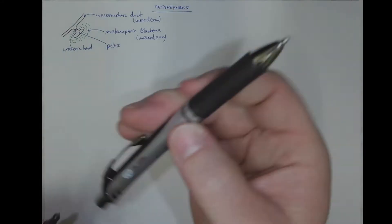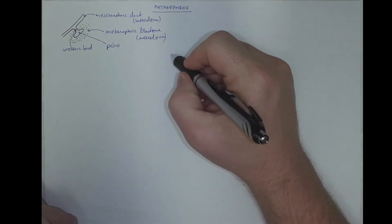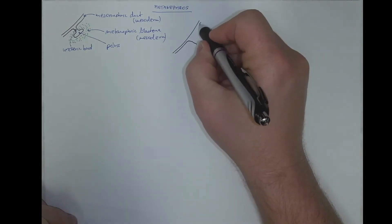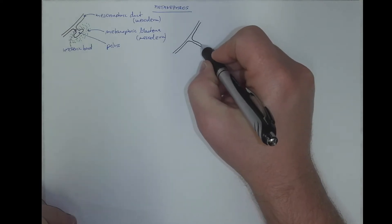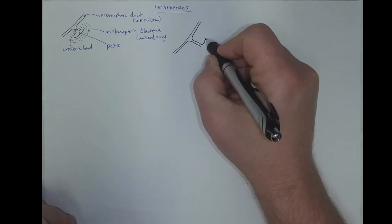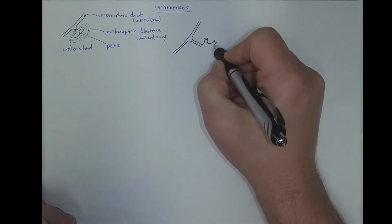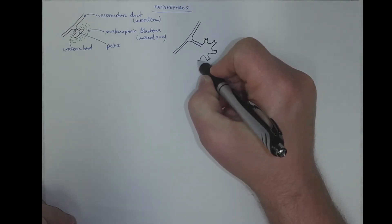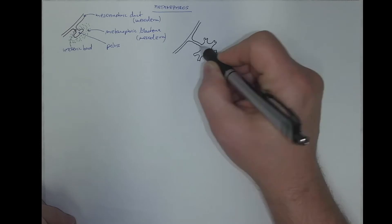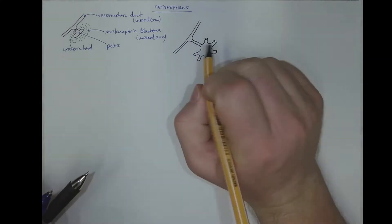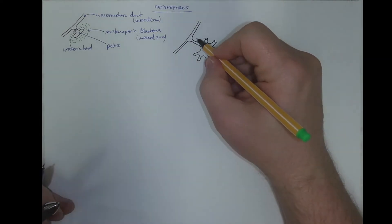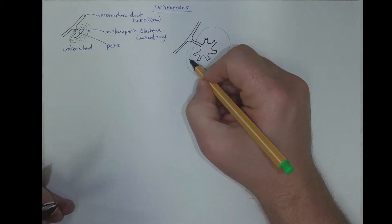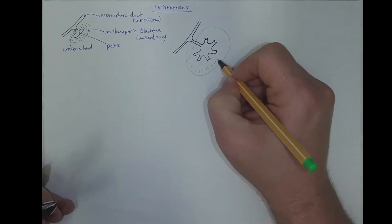The structures are growing, so the ureteric bud becomes longer, the pelvis is branching, forming the major calyces, and the population of the mesodermal blastema is also growing.